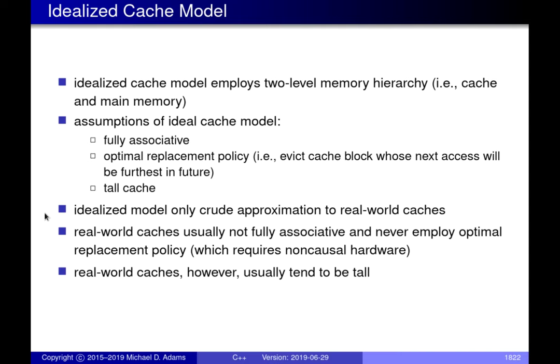This idealized cache model employs a two-level memory hierarchy — a single level of cache and then main memory. There are three key assumptions made by this model. The first is that the cache is fully associative. The second is that the cache employs an optimal replacement policy — in other words, the cache is omniscient. It can peer into the future and figure out which cache block is going to be used furthest into the future and choose to evict that particular block.